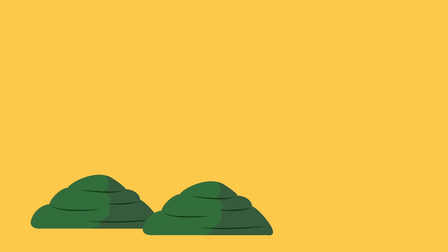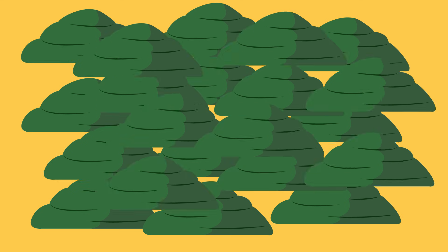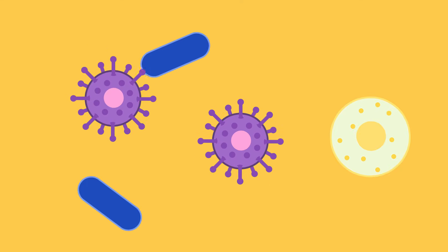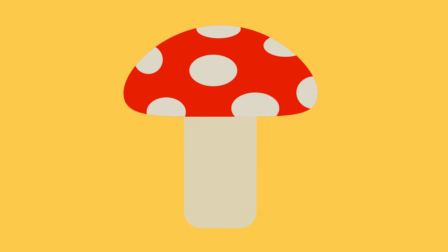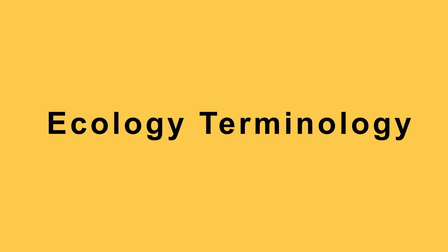Many kinds of decomposers are microscopic meaning you need a microscope to see them like bacteria. Others like fungi can be seen with the naked eye. So there is our key ecology terminology which you will come across in more detail in future videos.